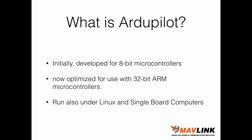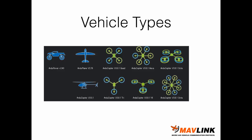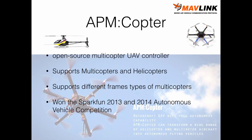ArduPilot was initially developed for 8-bit microcontrollers and is now being optimized for 32-bit ARM microcontrollers. It can also run under Linux and on single-board computers. ArduPilot supports several types of vehicles including ground vehicles, rovers, planes, and multi-copters such as quadcopters, octocopters, tricopters, and helicopters. There is a complete stack for copters, a different stack for planes, and a different stack for rovers, all included in ArduPilot.